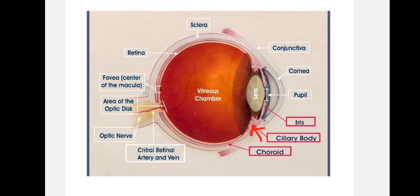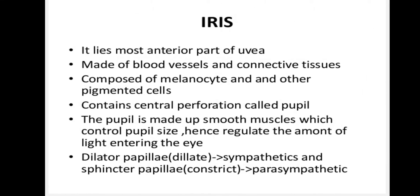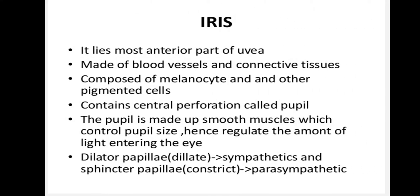In this video, we have three components: iris, ciliary body, and choroid. Together they form the vascular tissue of the eye, lying between the scleral and retinal layers.